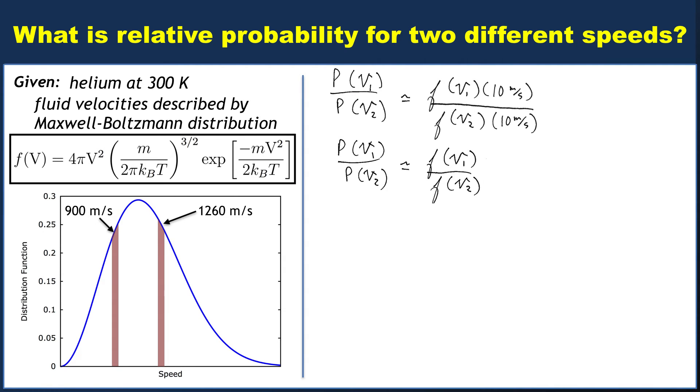So really, the relative probabilities, the probability ratio, is just the ratio of the distribution function values at those two velocities.